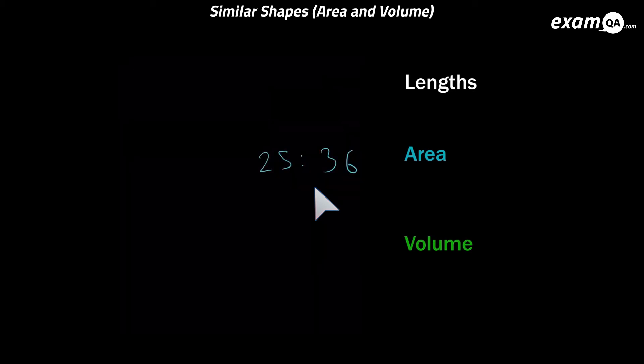In this example we've got the area ratio, but I want the volume ratio. Now we can't go straight from area to volume. As I mentioned before we need to get the length ratio first. Now from the area how do you get the length ratio? Well for length to area you square it, so we're going to square root. So square root of 25 is 5, and square root of 36 is 6. And that's our length ratio.